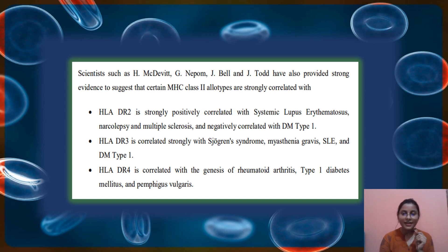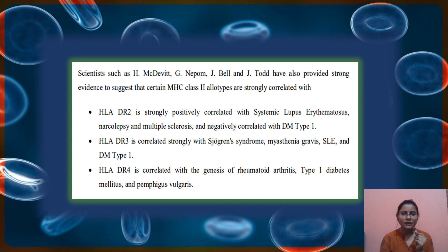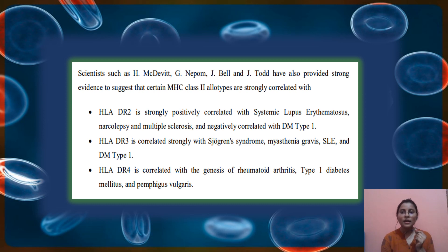HLA-DR3 is related with DiGeorge syndrome, myasthenia gravis, SLE, and type 1 diabetes — if HLA-DR3 increases, all these autoimmune diseases increase. HLA-DR4 is related with rheumatoid arthritis, type 1 diabetes, and pemphigus vulgaris. These three HLA-DR factors are important because they represent recent research work showing how HLA-DR factors can affect these diseases.